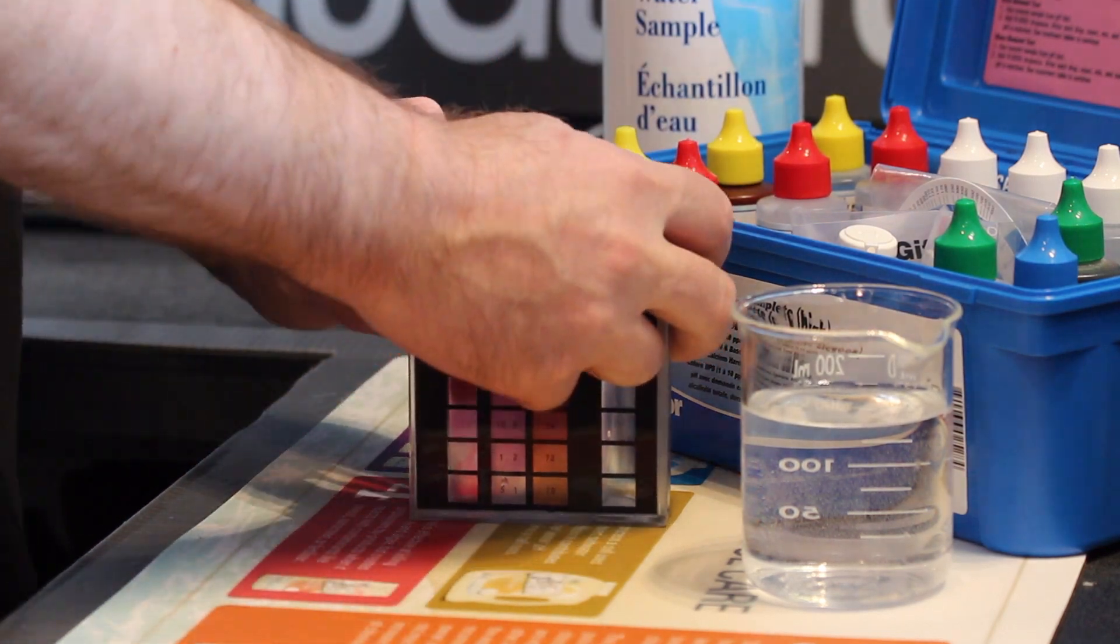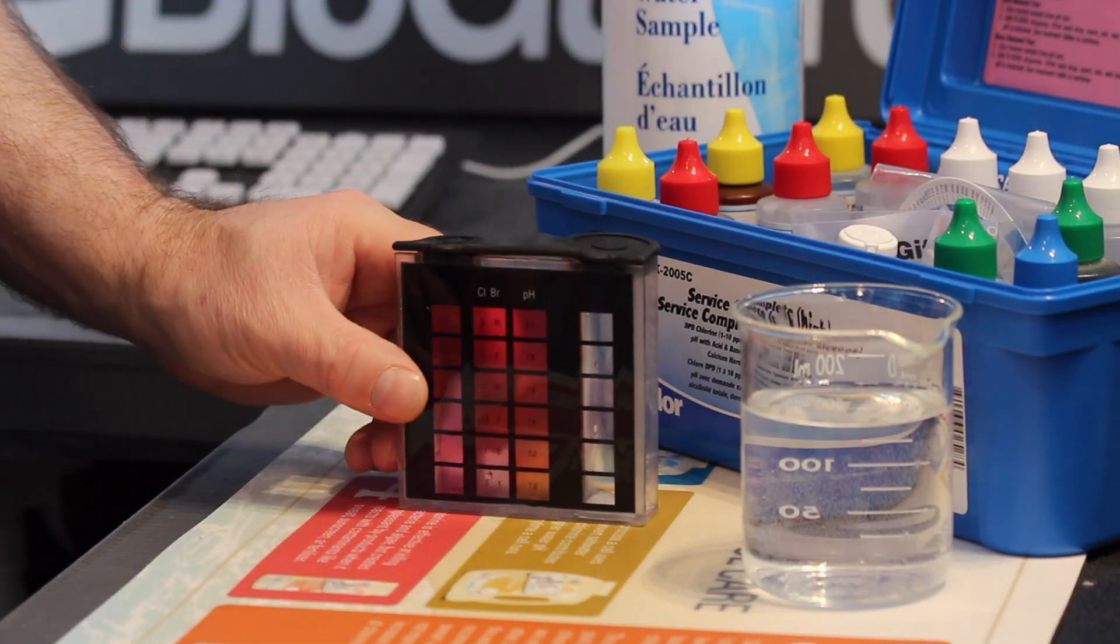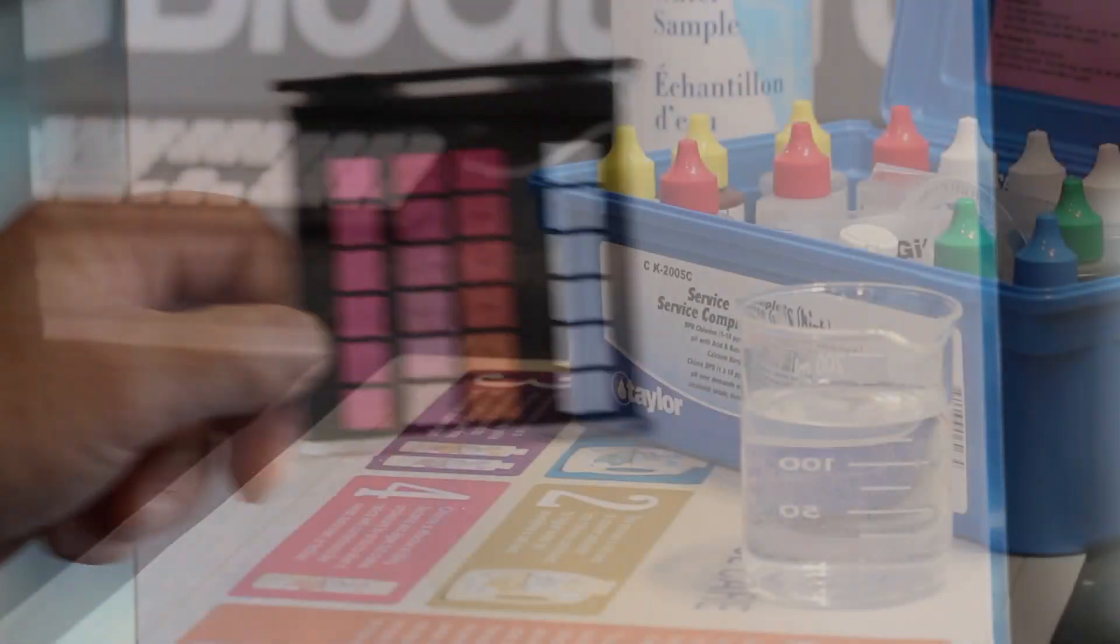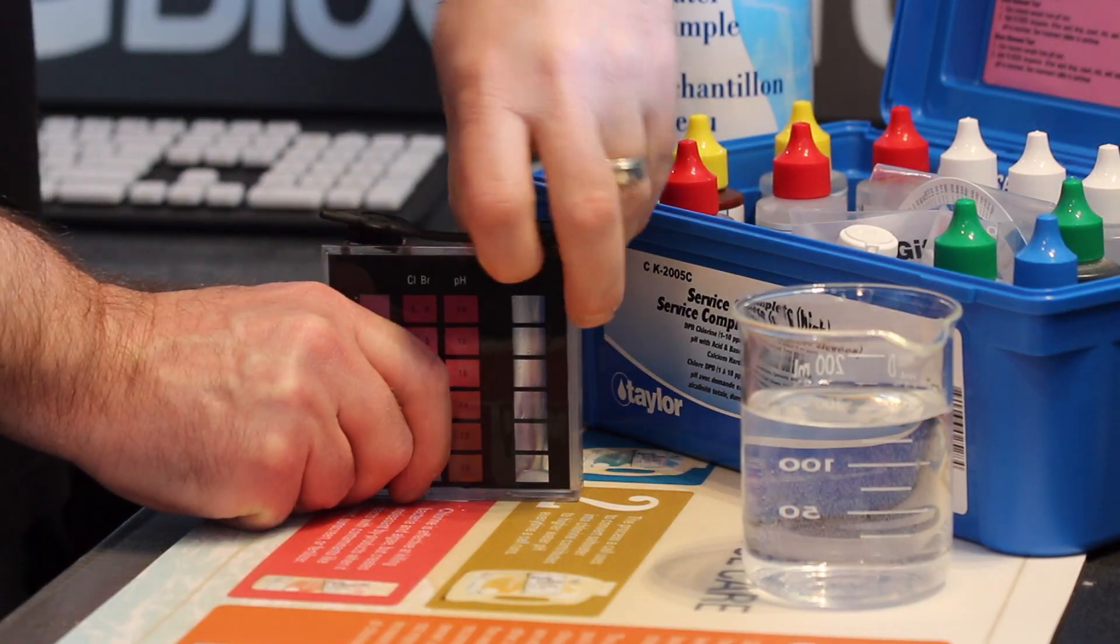Then cap the tube and invert to mix the sample. Now match the color to the color standard and record as free chlorine. Free chlorine is the chlorine that is available to sanitize and oxidize water.